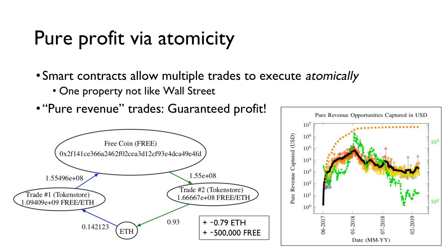In this work, we consider any trade that is called a pure revenue trade — those are trades in which bots profit in every single asset that's traded in the transaction. Another source of pure revenue trades is when one decentralized exchange has multiple orders that cross in the order book, so that one order is offering to buy something at a higher price than another order is offering to sell it. Bots can actually compose multiple orders from the same or different decentralized exchanges into a single transaction and execute this transaction atomically, so that if any trade in this transaction fails, the entire transaction is reverted. This characteristic is unique to blockchains and differentiates blockchain arbitrage from Wall Street arbitrage, in which all transactions execute probabilistically.